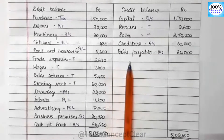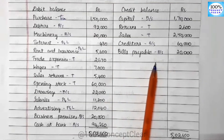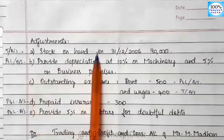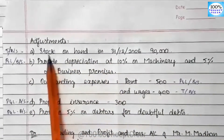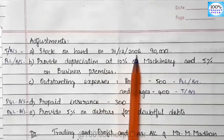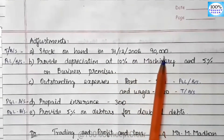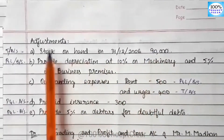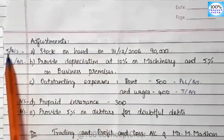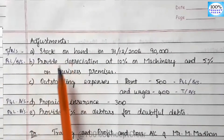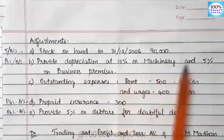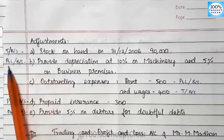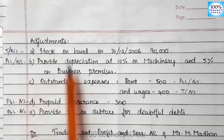We have additional information or adjustments. There are two items. The first one: stock on hand on 31-12-2006 is $90,000 — we will get the closing stock in both the Trading account and Balance Sheet. Next, provide depreciation at 10% on machinery and 5% on business premises — this depreciation goes to the P&L account and Balance Sheet.